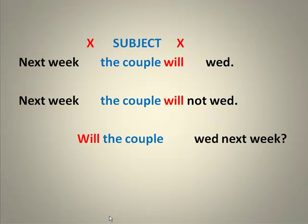'Next week, the couple will wed.' I just threw this in to show that even when there are words in front of the subject, when we make that yes or no question we know where 'will' belongs. 'The couple will not wed.' 'Will the couple wed next week?' Very often we take those words that come before the subject and move them to the end when we form the yes or no question. In this case, 'the couple' is the subject.